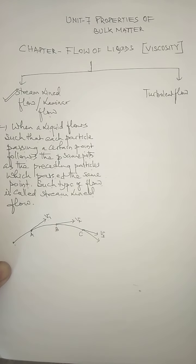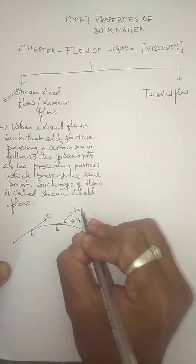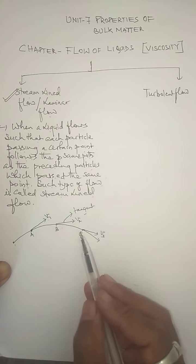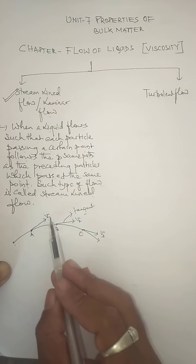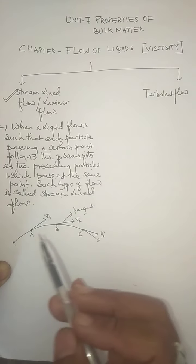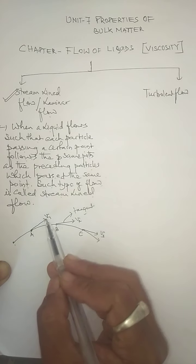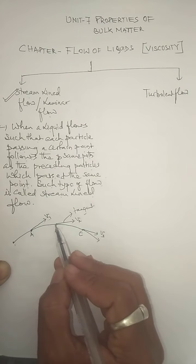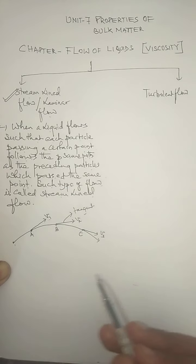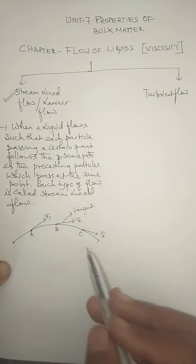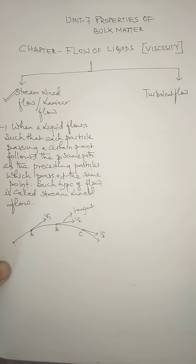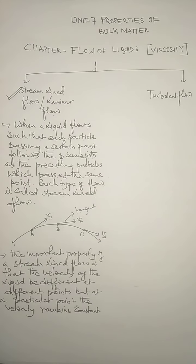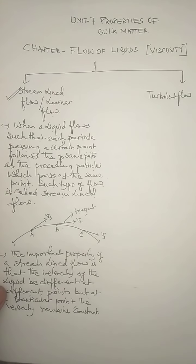Such type of flow by the liquid is called streamline flow. One important point to keep in mind: the tangent drawn at any point in a streamline gives the direction of velocity of the liquid at that point. So if you want to find the velocity of liquid at point A, it is given by the tangent drawn at A, and that velocity is V1. To find the velocity at point B, draw a tangent at B, and that gives V2. Similarly, you can calculate the velocity of liquid at any point in a streamline flow by drawing a tangent at that point.